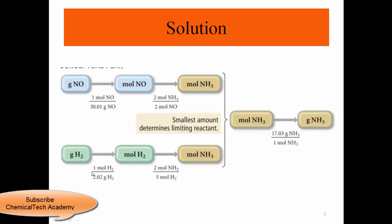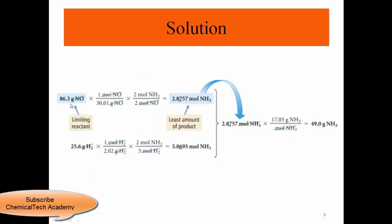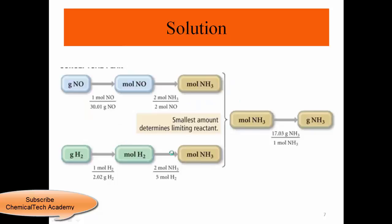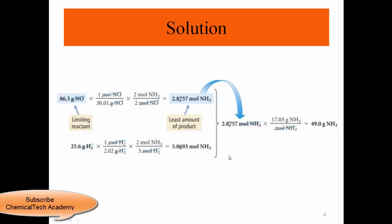We divide the grams of NO by its atomic mass and apply the molar ratio to estimate how much ammonia is produced: 86.3 grams NO divided by atomic mass gives 2.8757 moles of NH₃. On the other hand, for hydrogen, 25.6 grams divided by atomic mass — and since 5 moles of H₂ produces 2 moles of NH₃ — we get 5.0693 moles of ammonia.